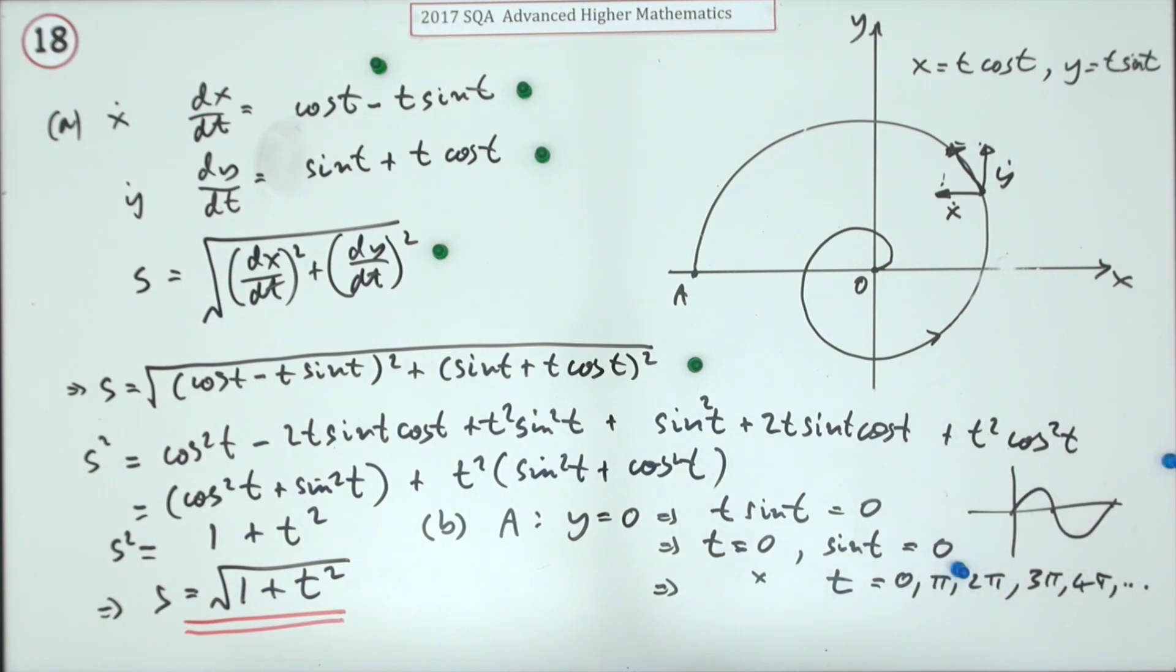So the answer will be—it's the fourth time, so it's one, two, three, four—it's at 3π. At A, t equals 3π, running out of room a bit.